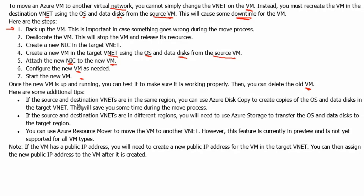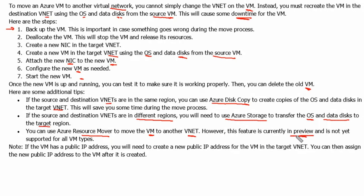Here are some additional tips. If the source and destination VNets are in the same region, you can use Azure Disk Copy to create copies of the OS and data disk in the target VNet, saving time during the move process. If they are in different regions, you will need to use Azure Storage to transfer the OS and data disk to the target region. You can also use Azure Resource Mover, though this feature is currently in preview and not yet supported for all VM types. Additionally, if the VM has a public IP address, you need to create a new public IP address for the target VNet and assign it to the VM after it is created.